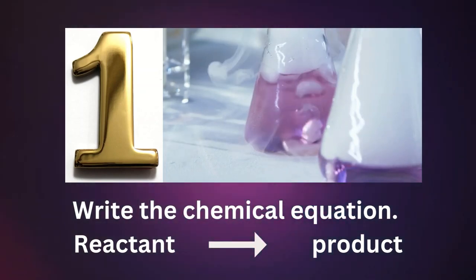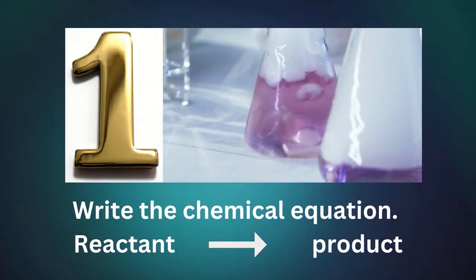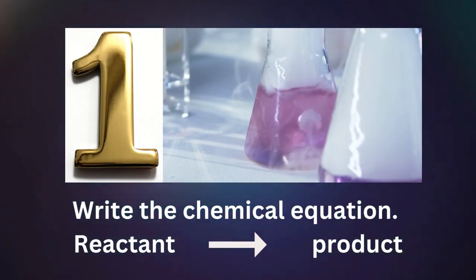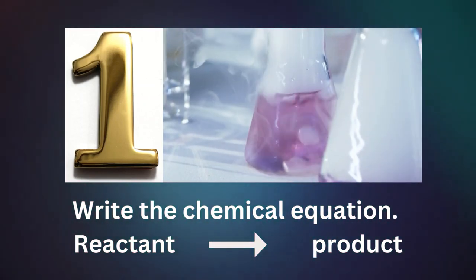We can balance a chemical equation by following six steps. Number one, write the complete chemical equation. Reactant side and product side, directed with the help of an arrow.